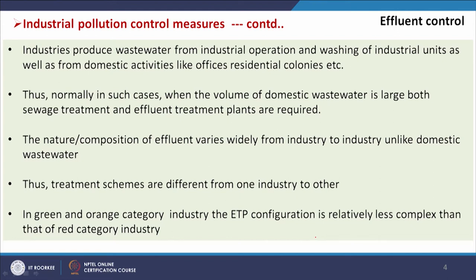With respect to effluent control, industries produce wastewater from industrial activities as well as residential colonies. If the residential colony produces large amounts of wastewater, it must be treated separately in a sewage treatment plant (STP) and released to the sewer line. The nature and composition of effluent varies widely from industry to industry, unlike domestic wastewater, and thus treatment schemes are very different from one industry to another.